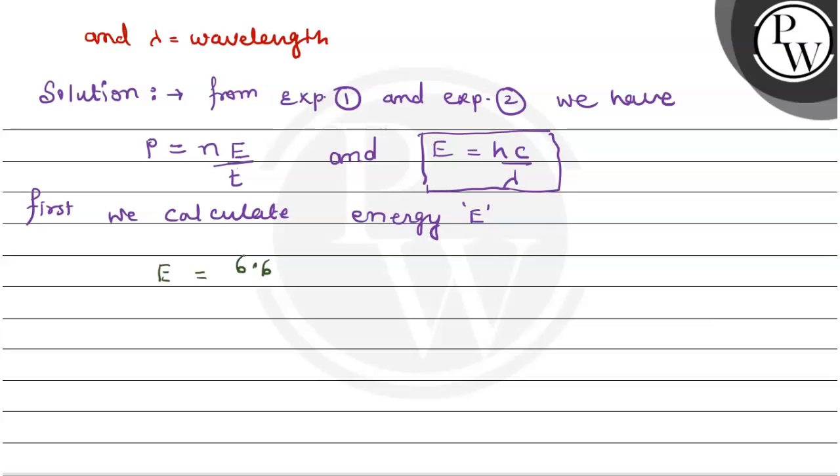H value is 6.63 into 10 to the power minus 34, c value is 3 into 10 to the power 8 meter per second, divided by lambda which is 667 nanometer. Convert to meters by multiplying 10 to the power minus 9. Now solve this.